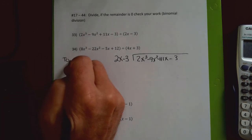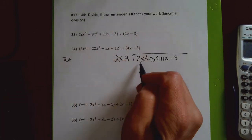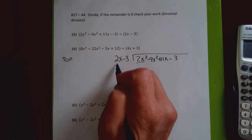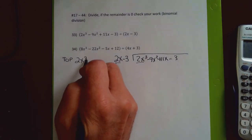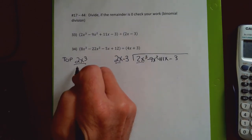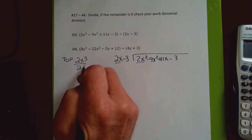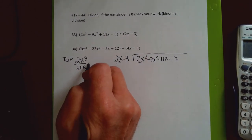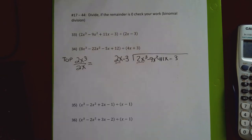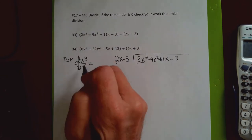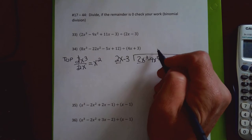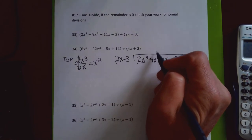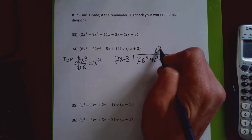On top of my division bar, I divide 2x cubed by 2x: the 2's cancel, and for the x's I subtract the exponents and get x squared. I'm going to line it up under the x squared term.